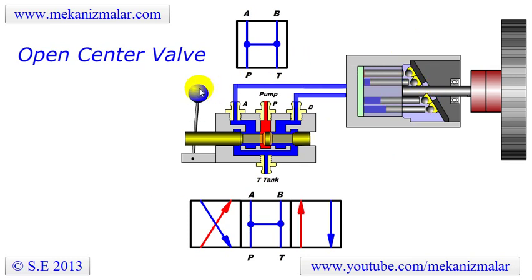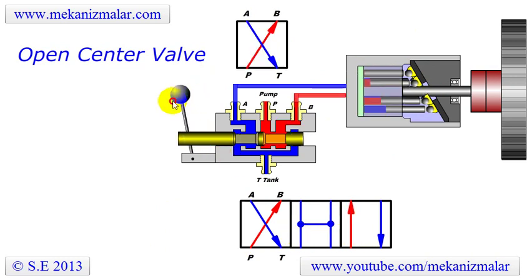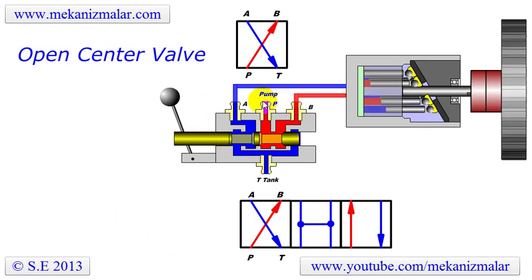The valve has three positions to control the direction of the oil coming from the pump. When the control arm is pulled to the extreme left, the pressurized oil coming from the pump is diverted to port B of the valve. At the same time, the low pressure oil coming from the motor is connected to port A of the valve, which is open to port T.